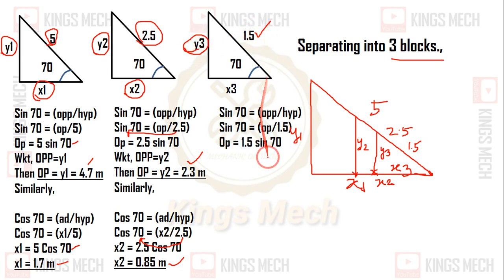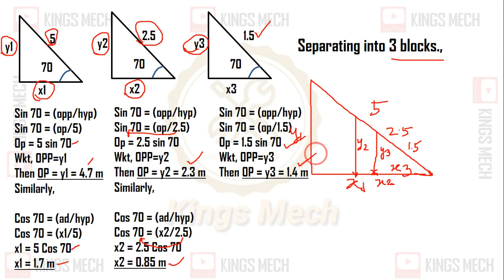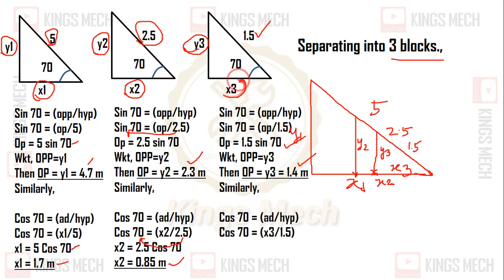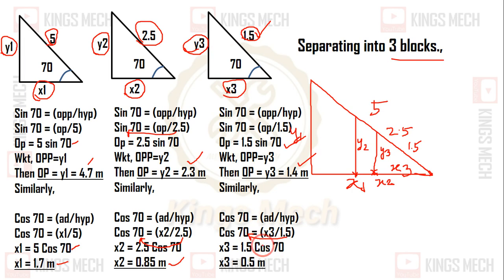For the man's position at 1.5 meters from the bottom: y3 equals 1.5 × sin 70 equals 1.4 meters. Similarly, cos 70 equals adjacent x3 divided by hypotenuse 1.5, so x3 equals 1.5 × cos 70 equals 0.5 meters.